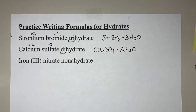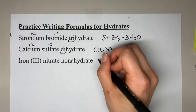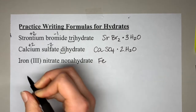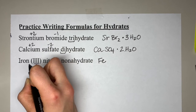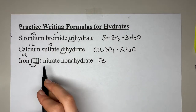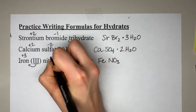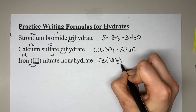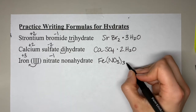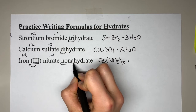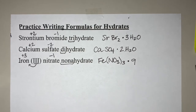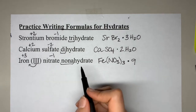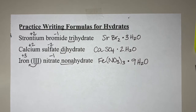For the last practice problem, iron(III) nitrate nonahydrate: iron is Fe; the Roman numeral III tells us +3 charge. Nitrate is NO3 with a -1 charge. Crisscrossing gives Fe(NO3)3. Then the hydrate portion: 'nona' means nine. The final formula is Fe(NO3)3·9H2O.